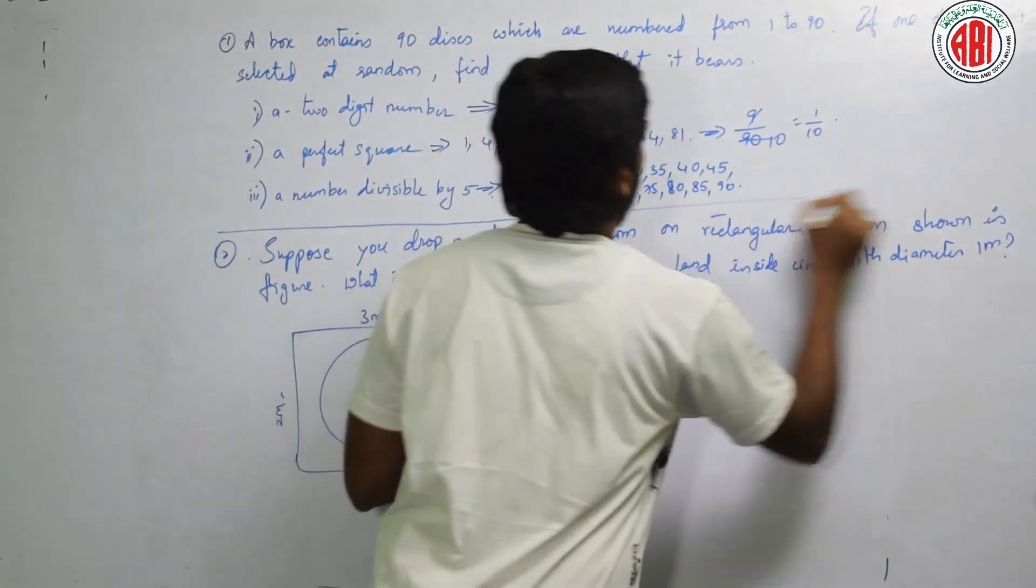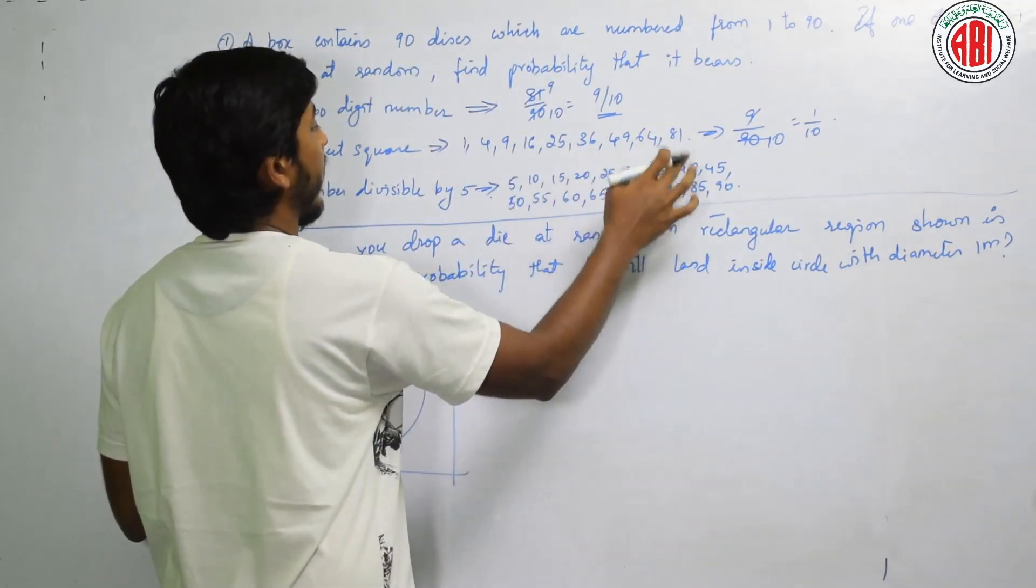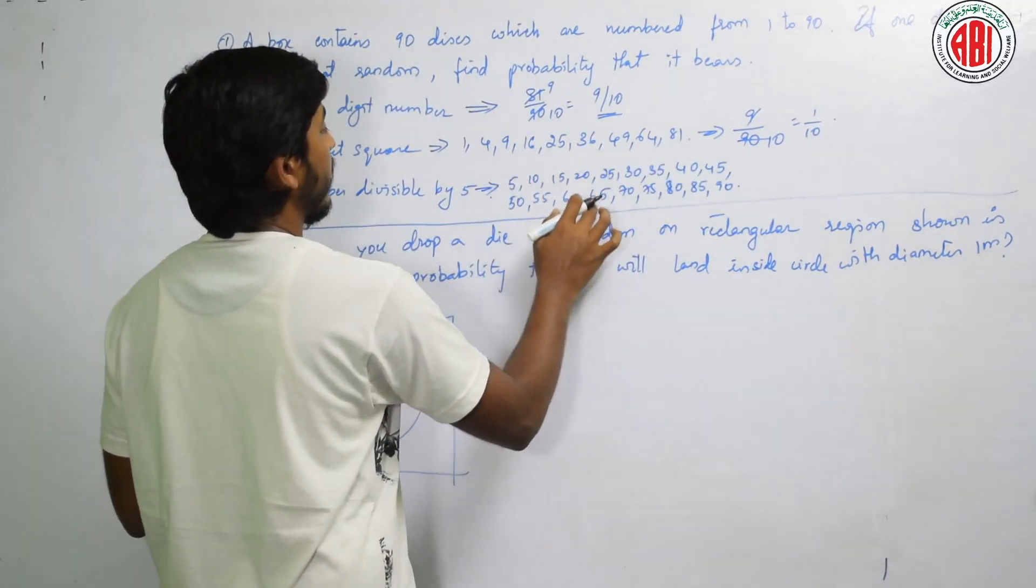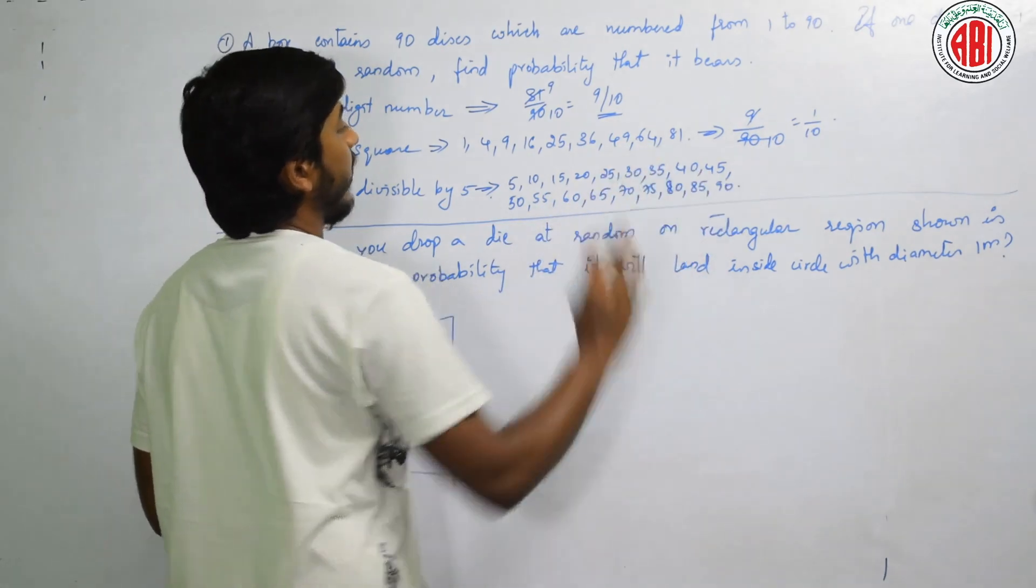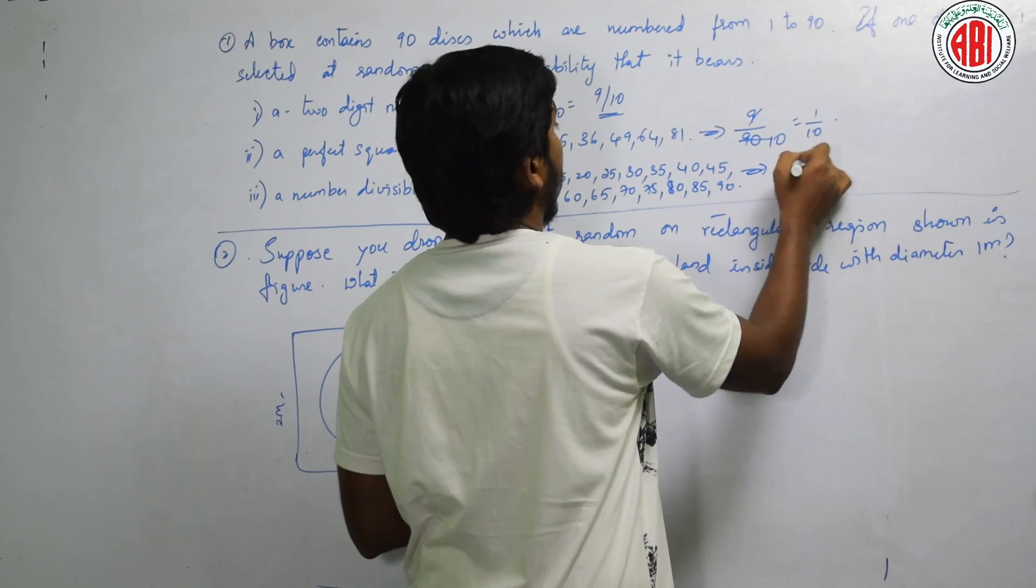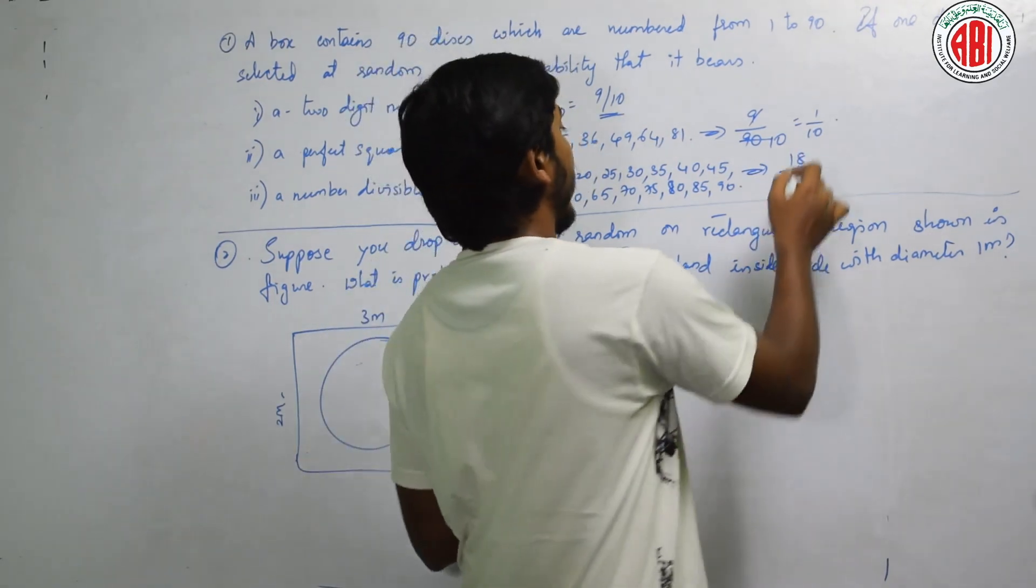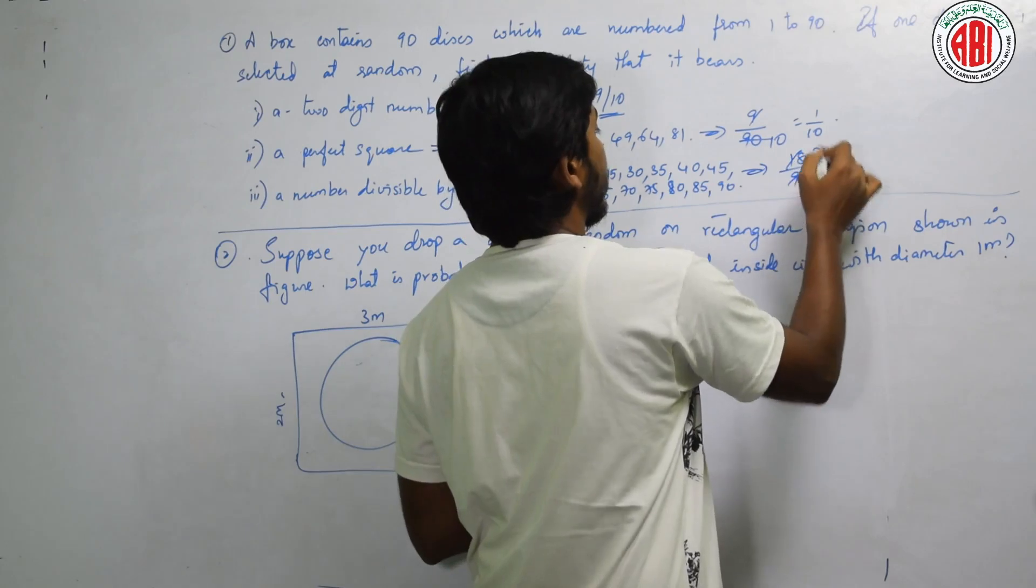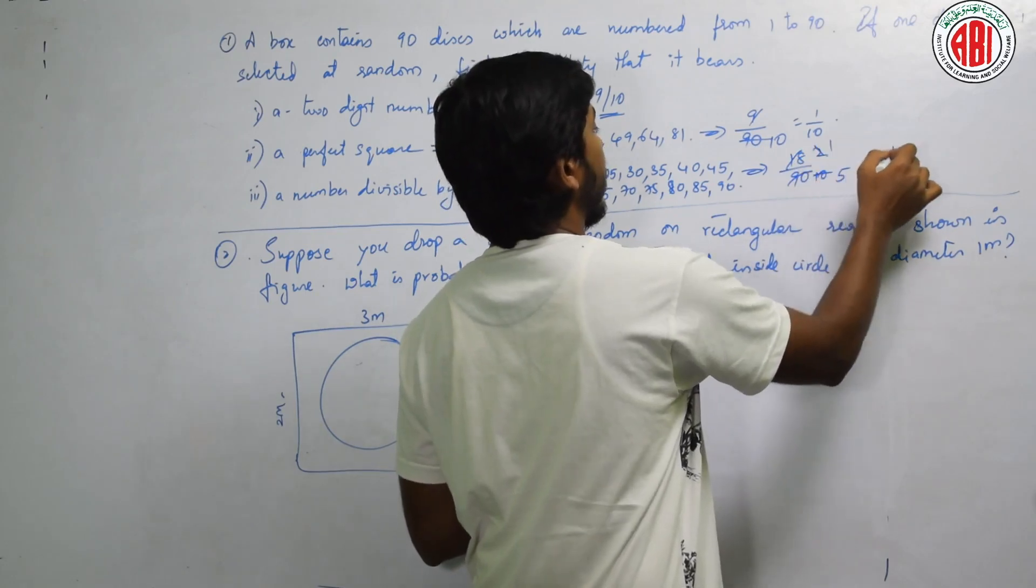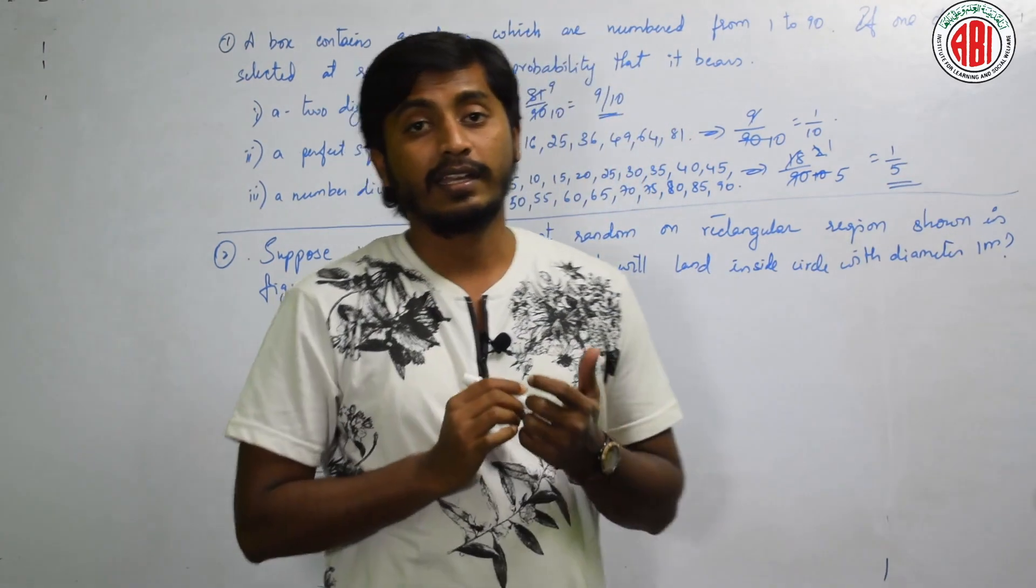1, 2, 3, 4, 5, 6, 7, 8, 9, 10, 11, 12, 13, 14, 15, 16, 17, 18. Total 18 numbers. 18 out of 90. 9 twos, 9 tens, 2 ones, 2 fives. Answer is 1 by 5. Is it not easy?